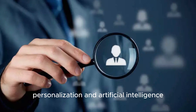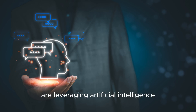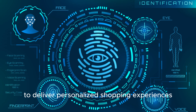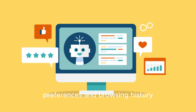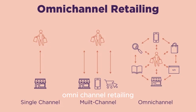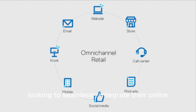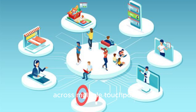Personalization and Artificial Intelligence: E-commerce platforms are leveraging artificial intelligence and machine learning algorithms to deliver personalized shopping experiences tailored to each individual consumer's preferences and browsing history. Omnichannel Retailing: In an increasingly connected world, omnichannel retailing has emerged as a key strategy for businesses looking to seamlessly integrate their online and offline channels, providing customers with a cohesive shopping experience across multiple touchpoints.